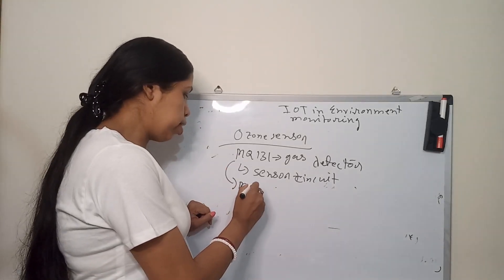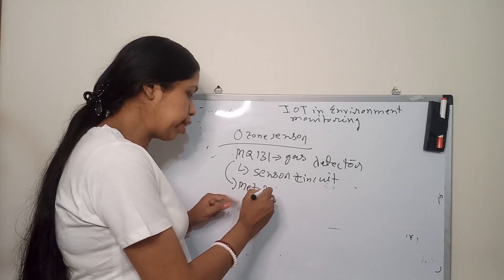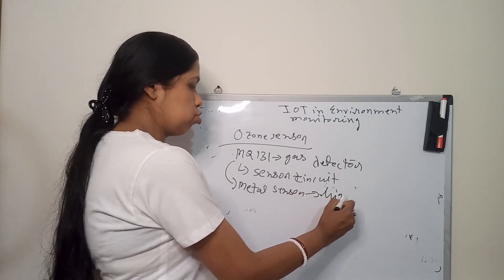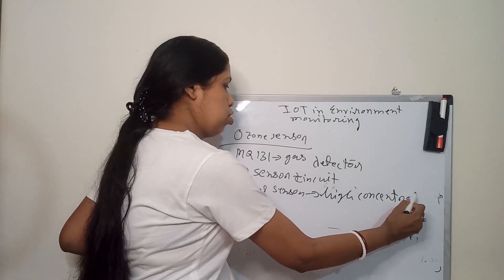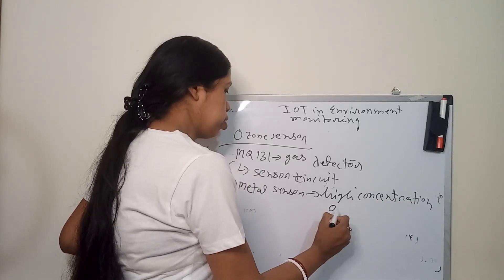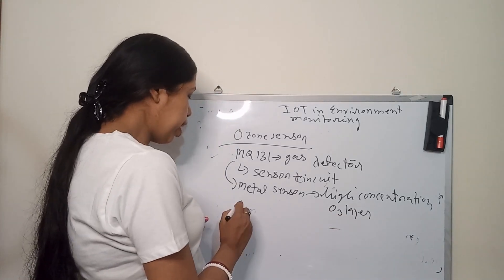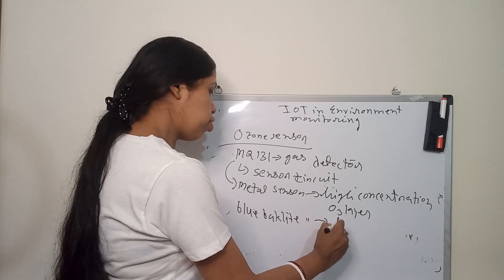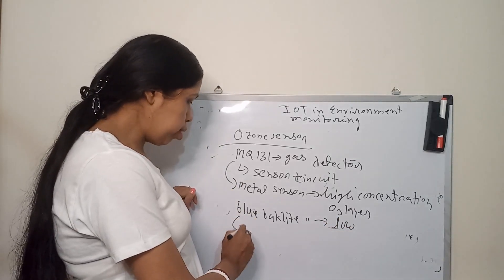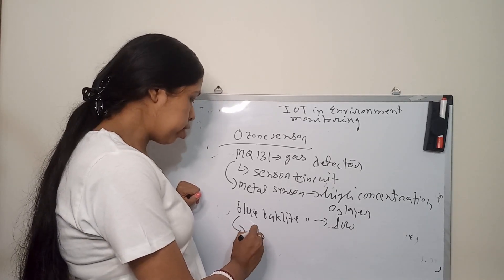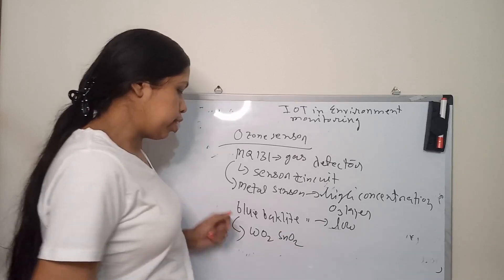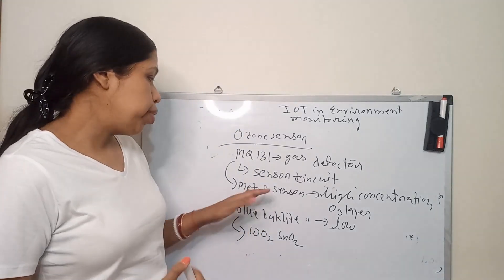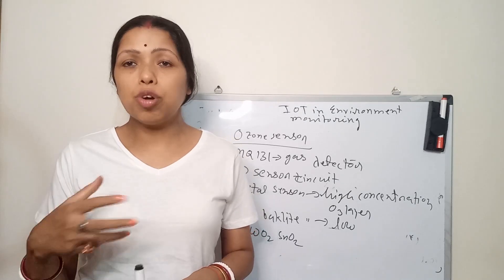From the MQ-131 gas sensor, one type is the metal sensor, which is normally used for detecting high concentration ozone. Another is the blue-black light sensor, which is used for low concentration ozone. So the metal sensor is for high concentration ozone and the blue-black light sensor is for low concentration ozone.